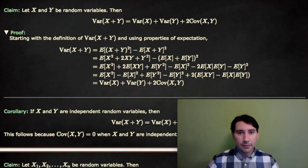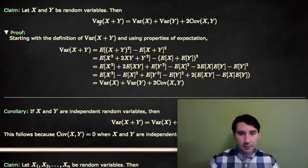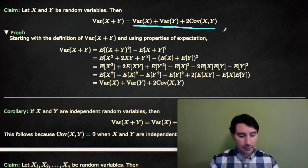Given any two random variables X and Y, the variance of X plus Y is equal to the variance of X plus the variance of Y plus two times the covariance of X and Y.